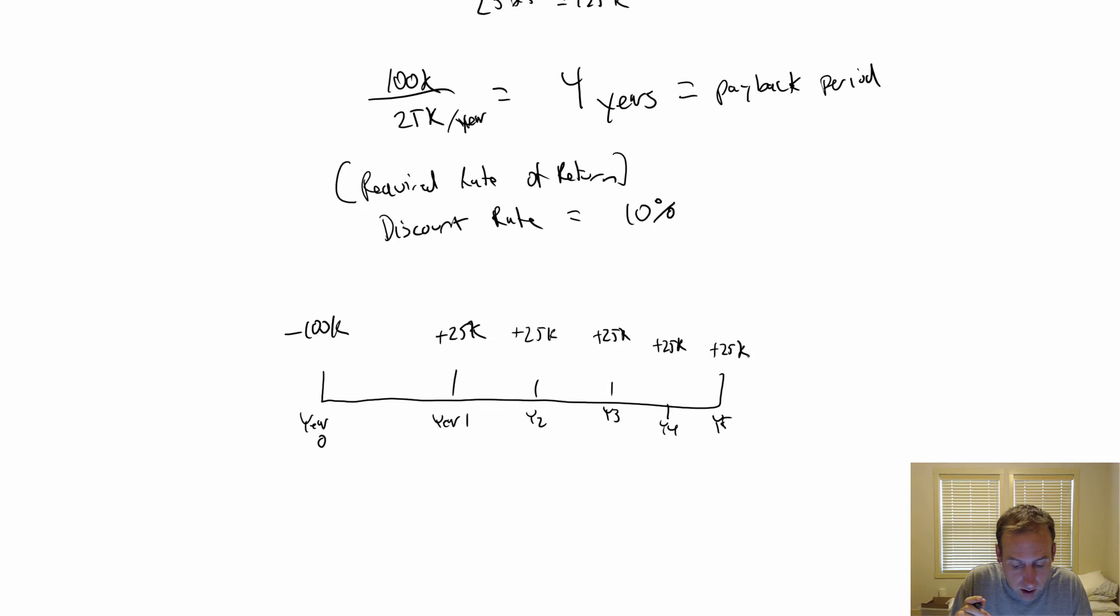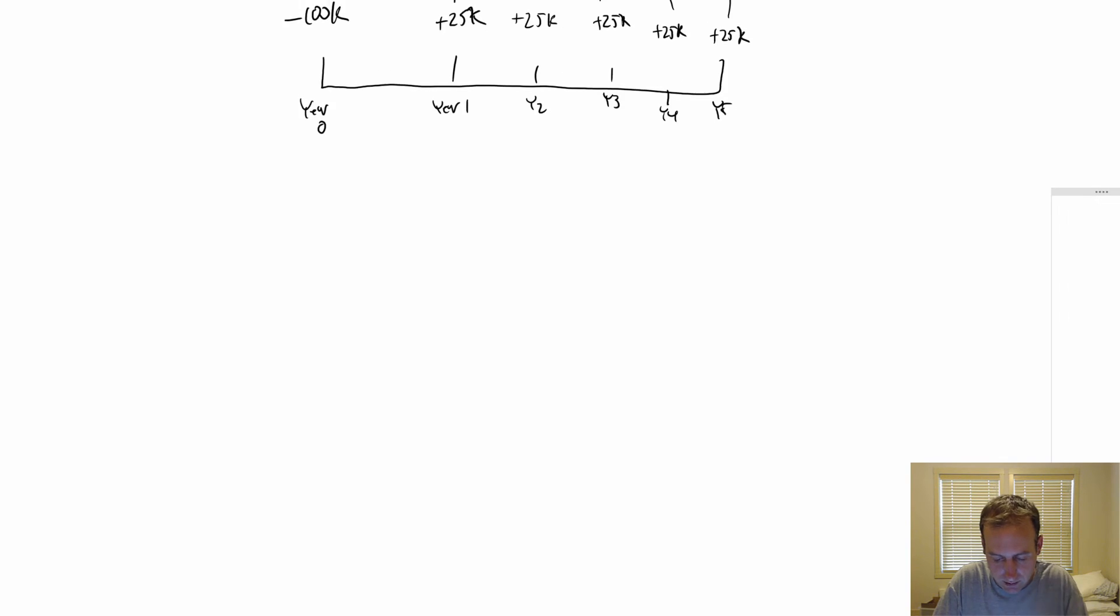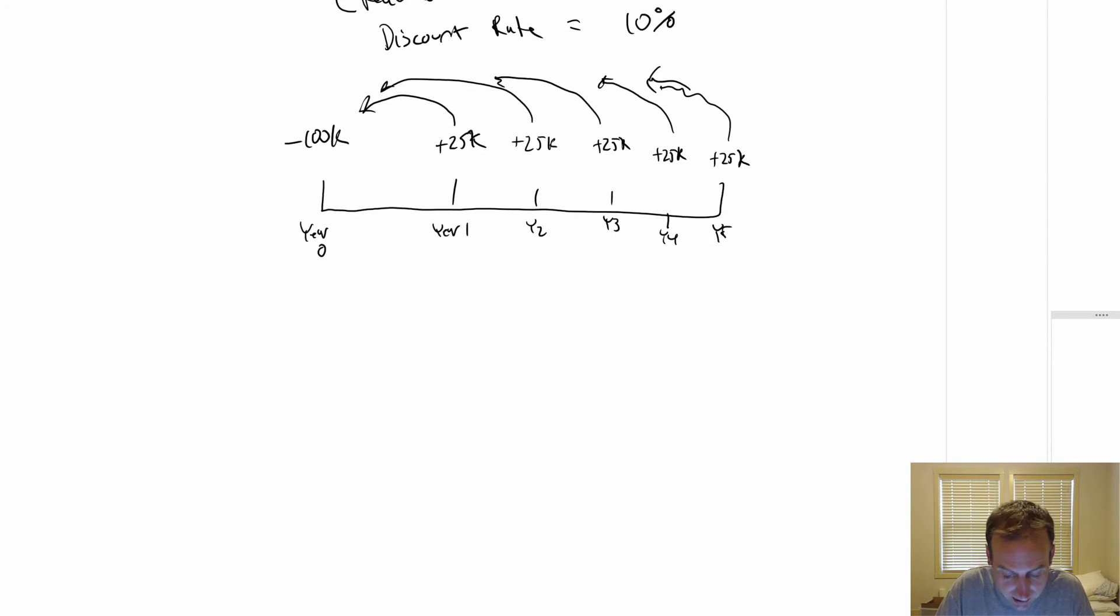The $100,000 negative is money leaving my pocket today. I need to figure out the present value of all of these cash flows. I need to figure out what $25,000 five years from now is worth today. How do I do it? I use my discount rate. Let's look at year one cash flow. Year one, I'm going to get $25,000, but that's a year from now. How do I figure out what that's worth today?